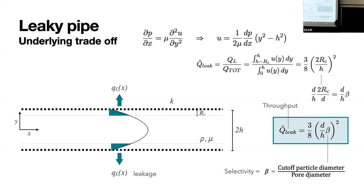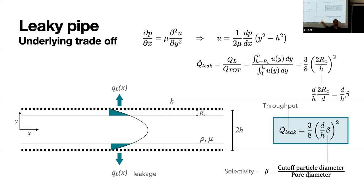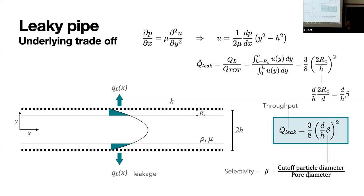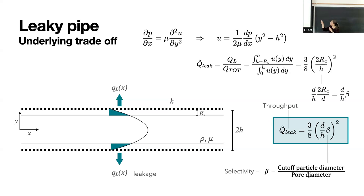You find that the fraction of fluid leaking out the side is proportional to the cutoff particle diameter squared. Here's the problem: I want that selectivity number to be very small, and I also need a high throughput to process a lot of water, which means I want the filtered water flow to be really large. I need this number to be really big and this number to be really small - but this is just the ratio of those sizes, so it doesn't help. There is an inherent trade-off in using this strategy for filtration: you have to make a choice about whether you're more concerned about throughput or about filtration quality.